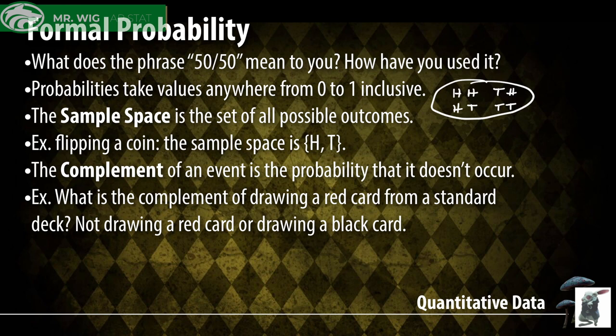The next concept is the complement. For example, what's the probability of drawing a red card from a standard deck? The complement of that would be not getting a red card — in this case, a black card — since we have either red cards or black cards in a standard deck. The complement is the probability of the event not occurring. If we write out the formula: if the probability of an event is P(A), then the complement equals one minus that probability.